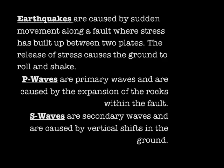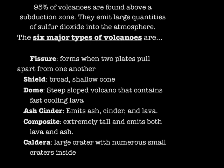95% of volcanoes are found above a subduction zone. There are six major types of volcanoes: fissures, shield, dome, ash cinder, composite, and calderas. They emit large quantities of sulfur dioxide into the atmosphere.